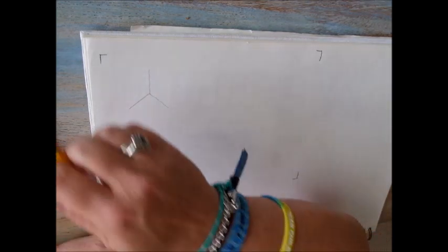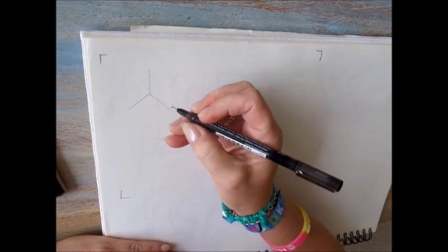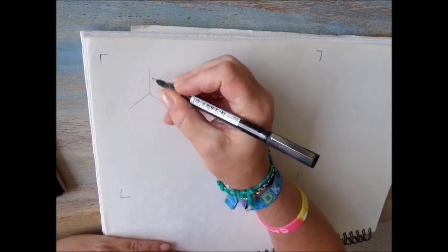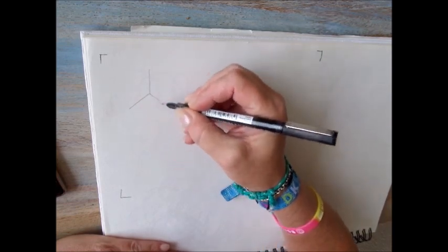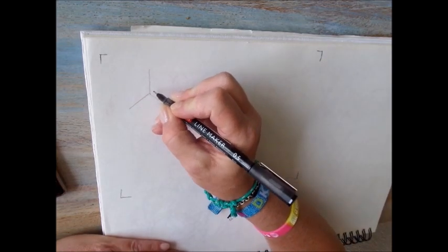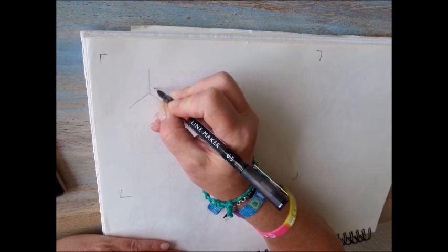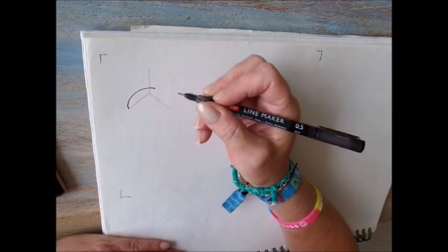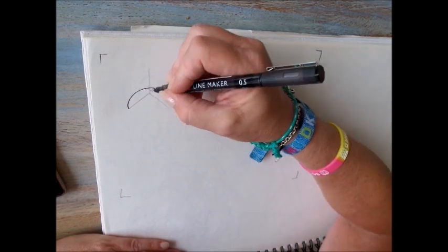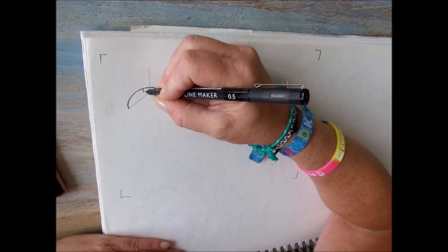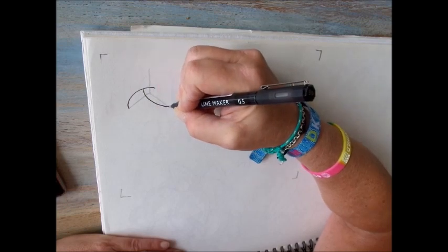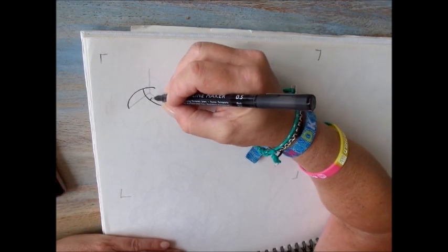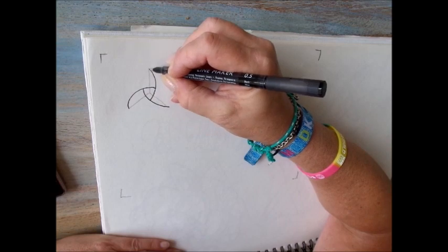The first step is to draw bow lines around these three lines, and it starts like this. Draw a bow till that line, draw the next bow till this line, and the next bow till that line.